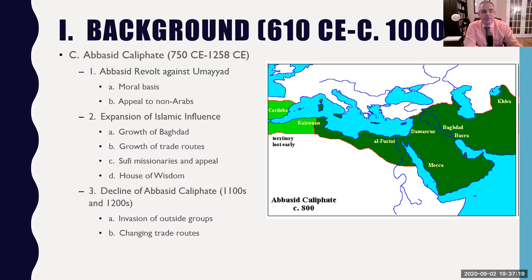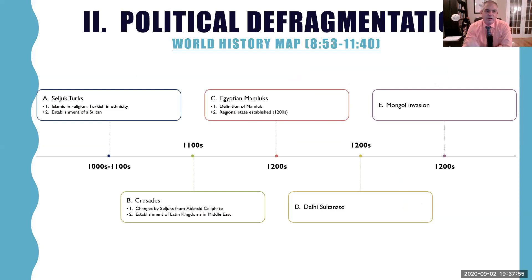Around the 1100s to 1200s, the Abbasid Caliphate begins to fall. Part of it is invasion from outside groups, and the other part is that as trade routes begin to move further north, less trade comes through Baghdad, and the Abbasid lose money and influence. So you have both an economic development — the changing of trade routes — and a military development: the invasion of outside groups leading to political defragmentation.